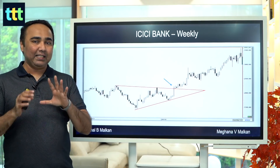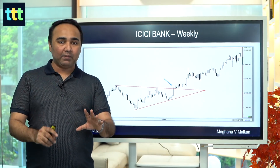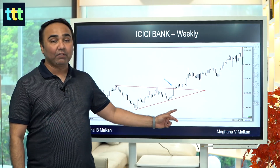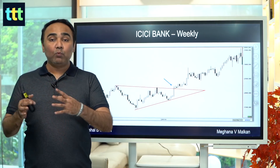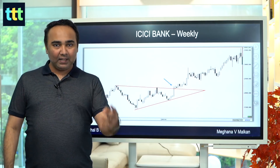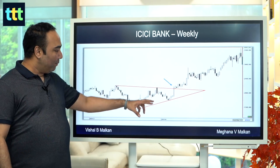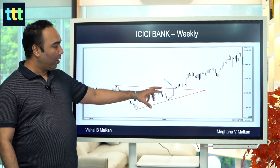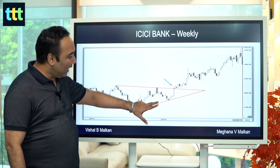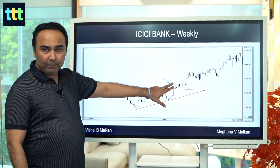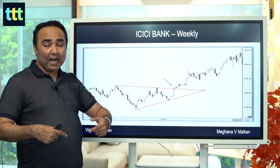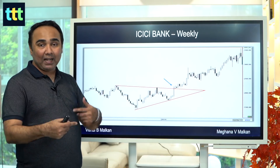Second point: they at least need four points. One trend line will have two points, another trend line will have two points — that means a triangle will have four points. Third, and most important, after the triangle — which is a sideways movement — it breaks out. It should break out with high volume. That's price pattern volume.